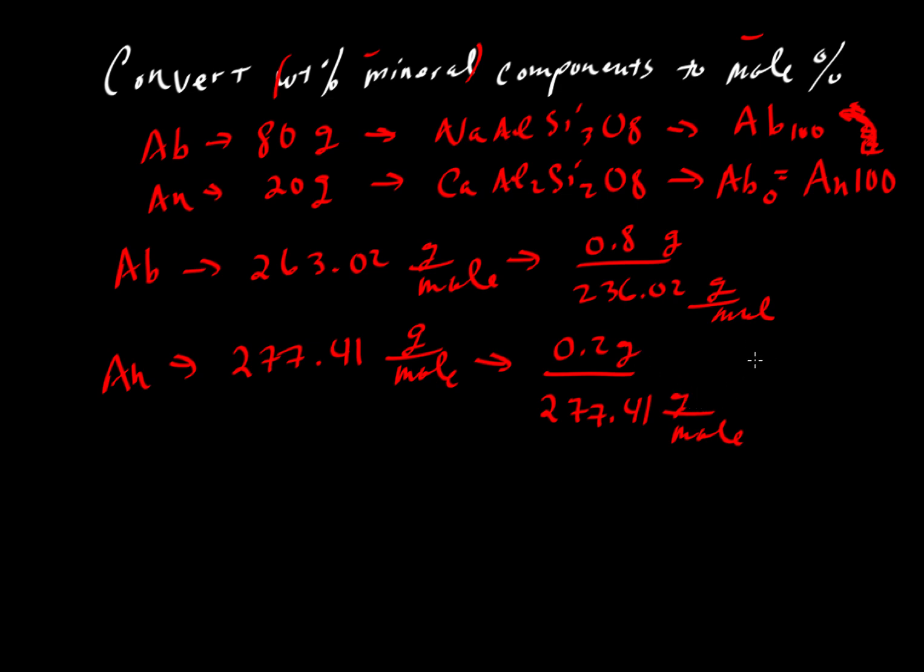Our weight here is given in grams. Grams will cancel and we'll end up with moles. And so if we do this calculation, then over here, we'll get a very small number, 0.003042. And then this fellow for anorthite will be 0.000721. A small number, much smaller than this, of course, because we just have a tiny fraction of anorthite.